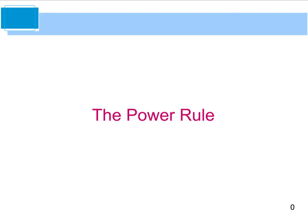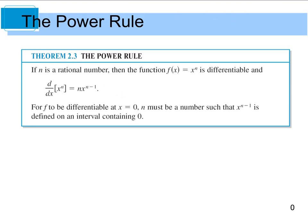Next, we're going to look at the power rule. The power rule states that if n is a rational number and you're given a function where f of x is equal to x to the nth power, then when we take the derivative, we're going to take the exponent and pull it down up front, and then we're going to leave the exponent in the exponent spot but subtract 1 from it. So for example, if I give you x to the third power and take the derivative, I pull the 3 down front to give me 3x, and 3 minus 1 gives me 3x squared. That's how the power rule works.